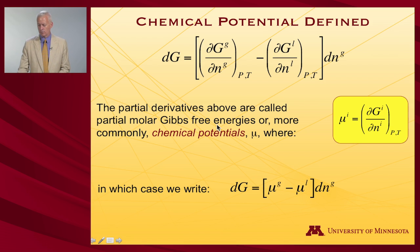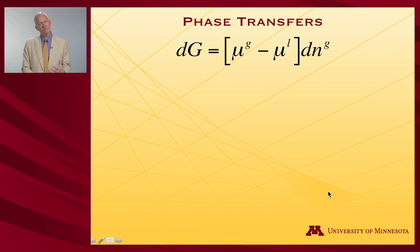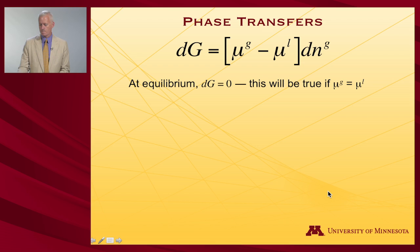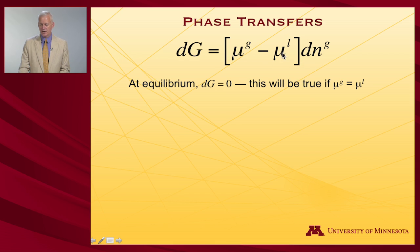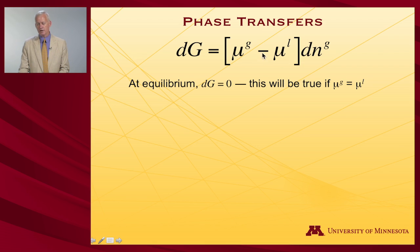Given that definition, I can now write more conveniently: dG equals the chemical potential in the gas phase minus the chemical potential in the liquid phase, times the change in the number of moles moving into the gas phase. At equilibrium, the condition where dG equals zero and there is no net movement in either direction, the two chemical potentials must be equal to one another.